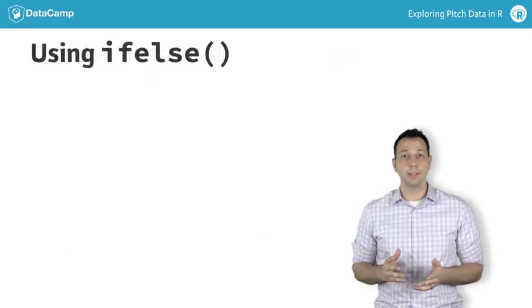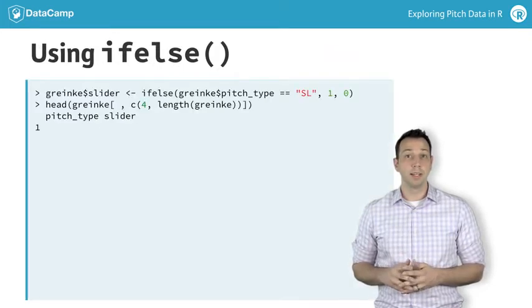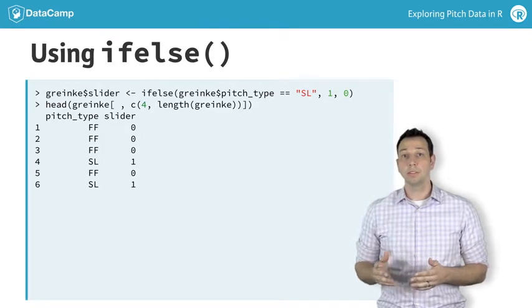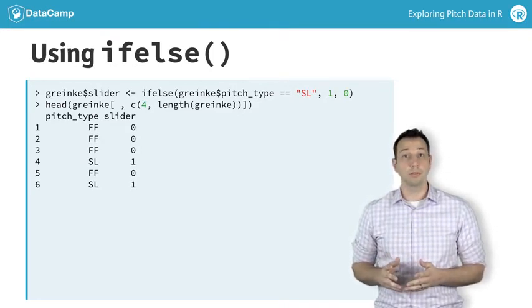You can identify pitch type in the data with the pitch_type variable, and make a separate histogram of each pitch type. Here, let's just create a histogram for sliders, represented by the SL code in the pitch_type variable.